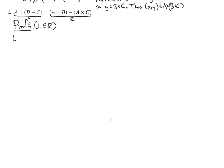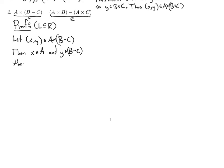Let's start. We have a Cartesian product here, so let X, Y be an element of A cross B minus C. So what does that mean? X is an element of A and Y is an element of B minus C. And that tells us more about Y: Y is an element of B and Y is not an element of C. That's what it means to be in B minus C — you're in the first set but not the second.